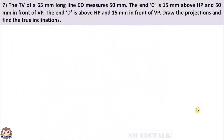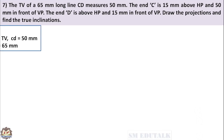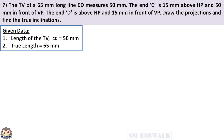7th problem. The top view of a 65mm long line CD measures 50mm. The end C is 15mm above HP and 50mm in front of VP. The end D is above HP and 15mm in front of VP. Draw the projections and find the true inclinations. It is given that top view length CD equals 50mm and true length is 65mm. Let us see how to draw the projections of the line CD with the given data.